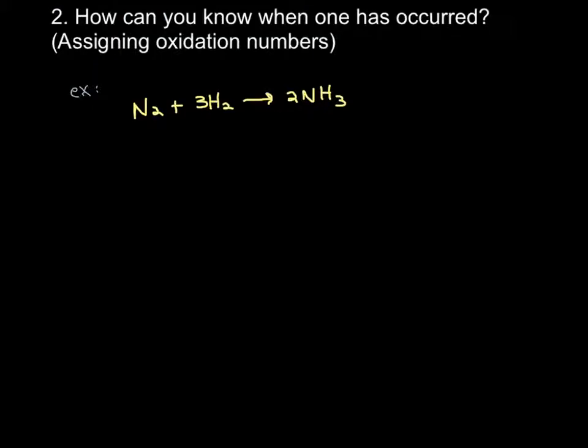So how do we use oxidation states? Assigning them is one thing, but understanding why you're doing it is another. If you have the Haber process equation and want to know whether it's a redox reaction and where the electrons are going, you assign oxidation states to every element and see what's going on. Rule two says that oxidation states of individual non-bonded elements are zero. So N₂ has an oxidation state of zero, and H₂ also has an oxidation state of zero because it's not bonded to anything other than itself.